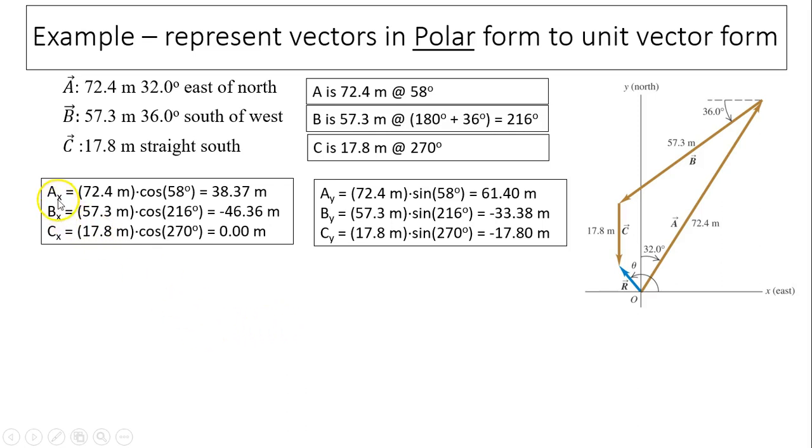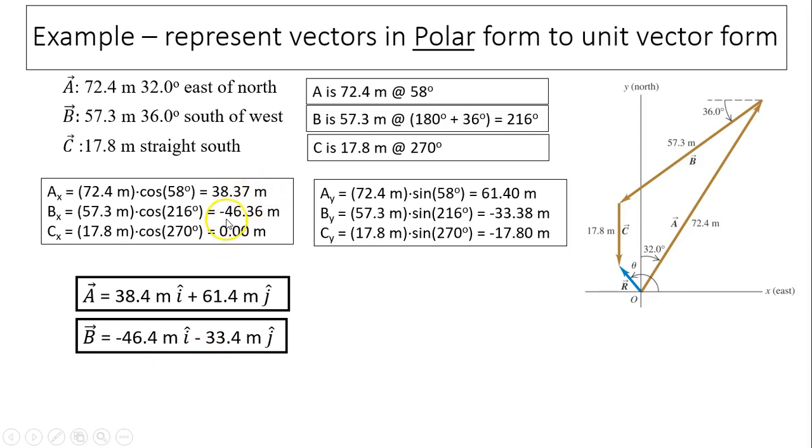From here we can figure out the x and y components by using: the x component is the magnitude times cosine theta, and the y component is the magnitude times sine theta. Once we have the x and y components, we can find vector a. Vector a is the sum of vector ax plus vector ay. ax is 38.37 i. I wrote 38.4 here because I want to use three sig figs, i plus 61.4 j. So this is vector a. Now similarly, you can do vector b and vector c. So that's how you change vectors from polar form to unit vector form.